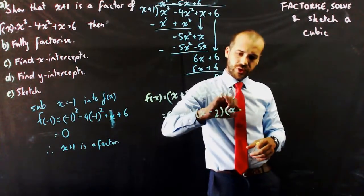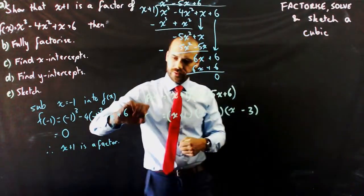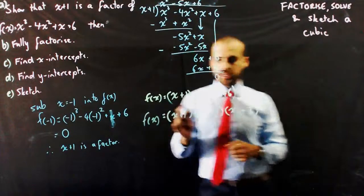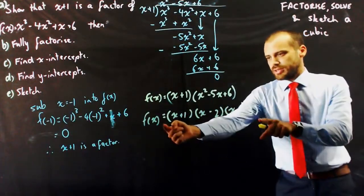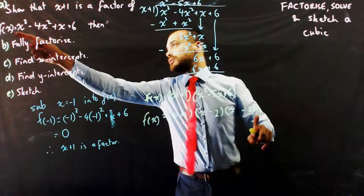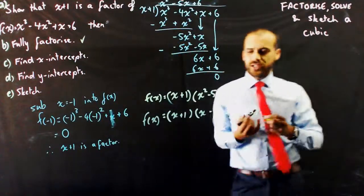So, probably negative 2 and negative 3. Okay. So, f of x is equal to x plus 1 times x minus 2 times x minus 3. We're saying this is the same as this. I have now fully factorized it.